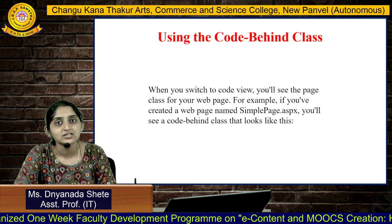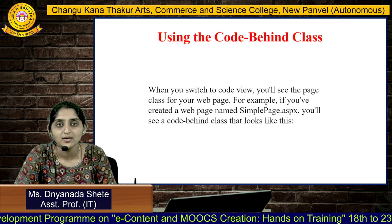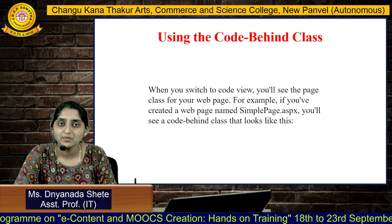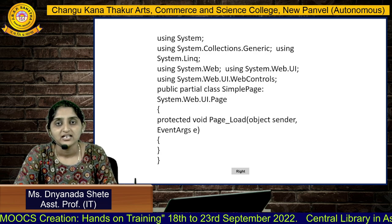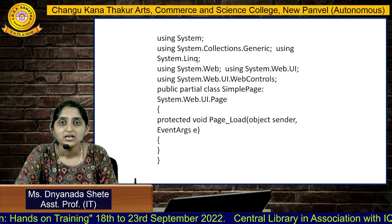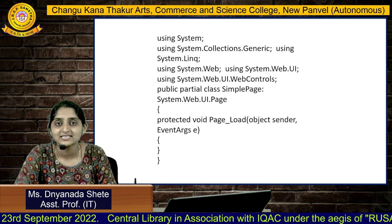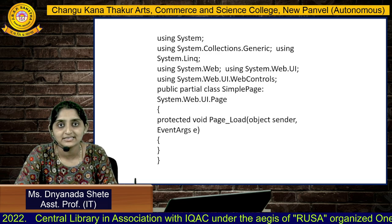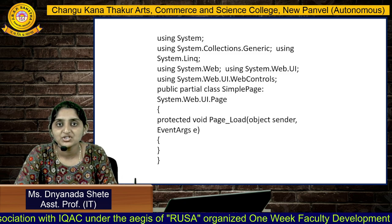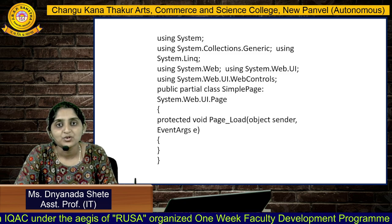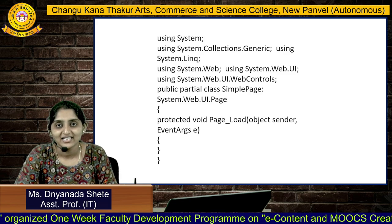When you switch to Code view, you will see the page class for your web page. For example, if you have created a web page named SamplePage.aspx, you will see the code-behind class. The code declares: using System; using System.Collections.Generic; using System.Linq; using System.Web; using System.Web.UI; using System.Web.UI.WebControls. Then: public partial class SimplePage : System.Web.UI.Page, followed by the protected Page_Load event handler. Thank you, students.